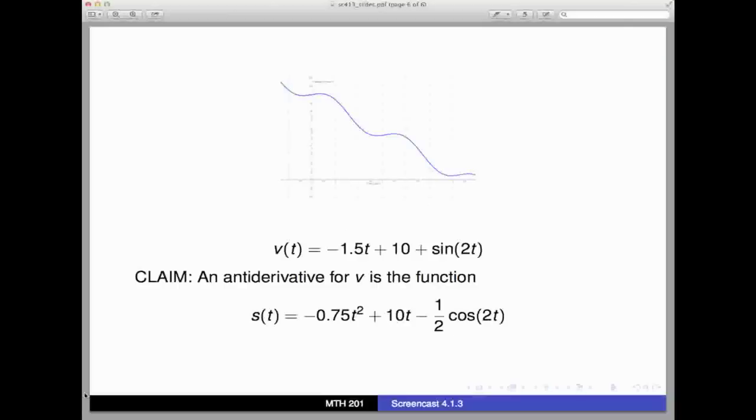Here's the function for velocity that we used in screencast 4.1.2. Now, unbeknownst to you, that function had a formula behind it. Namely, v of t equals negative 1.5t plus 10 plus sine 2t. Now, I claim that the following function is an anti-derivative for that velocity: negative 0.75t squared plus 10t minus 1 half cosine of 2t. That is, if I take the derivative of the second function, I'll get my velocity function. On the next slide, I'm going to verify that this is indeed the case, that if I take the derivative of this anti-derivative, I end up with my velocity that I started with. And then I'm going to use the fact to find the distance traveled by the moving object on the interval from 0 to 5.